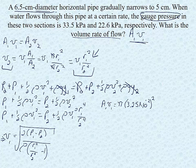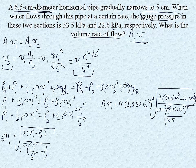Times the square root of 2 times 33.5 times 10 to the 3rd minus 22.6 times 10 to the 3rd. And again times 10 to the 3rd because these are in kilopascals. Divided by the density, we are talking about water. So the density is 1 times 10 to the 3rd times 3.25 times 10 to the negative 2 to the 4th over 2.5 times 10 to the negative 2 to the 4th minus 1.